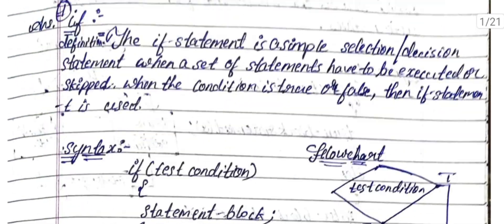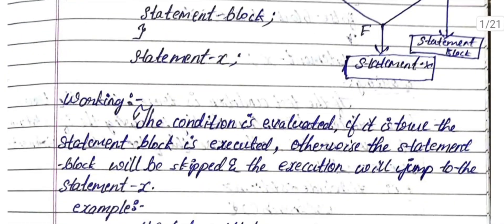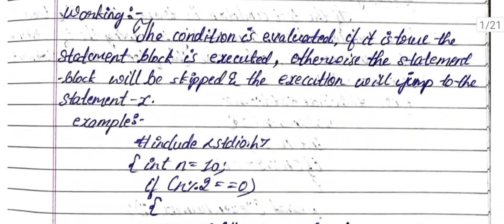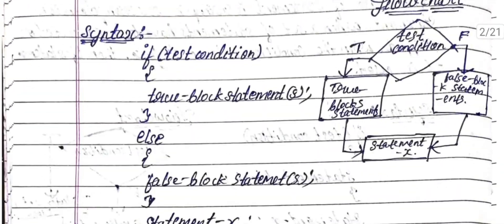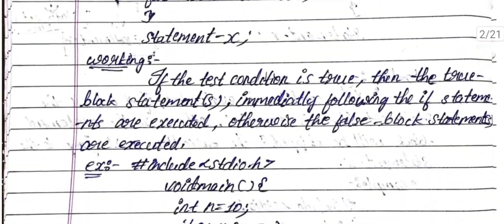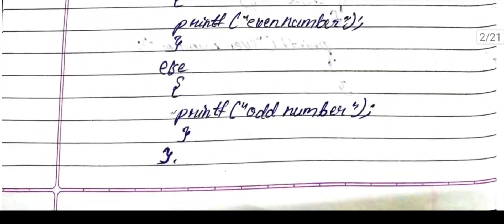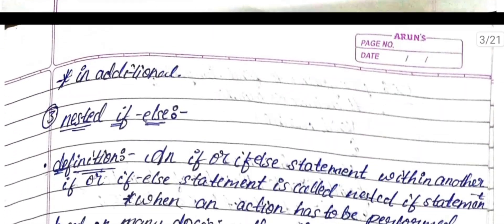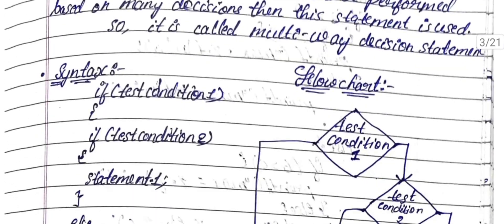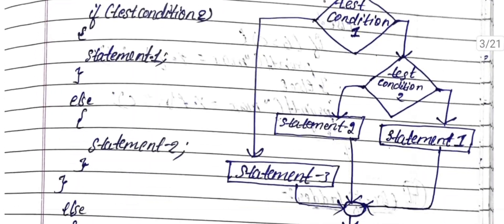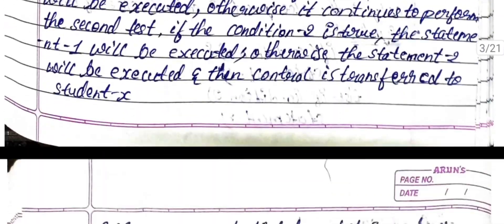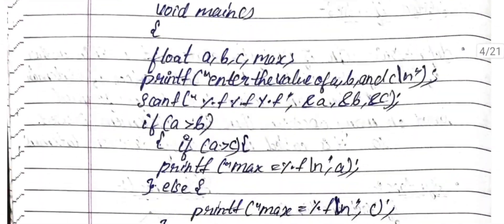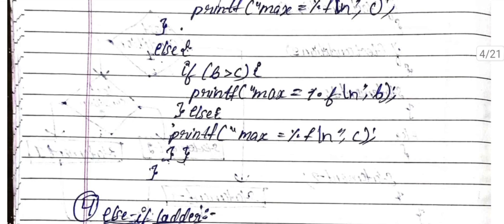First Year 2022 Scheme, 2023 VTUC Programming Exam. The PDF link for all five module-wise solved model question papers and answers of Principle of Programming Using C is in the description box, module-wise.